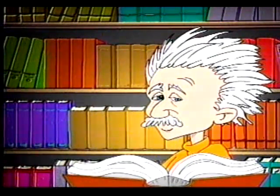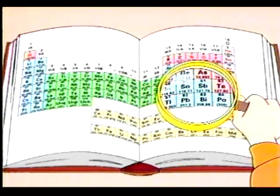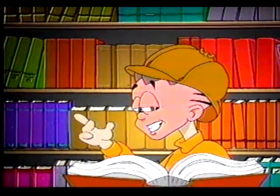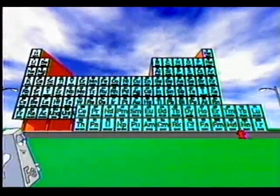Sherlock ya se siente genio. De su investigación preliminar ya sabe que existen metales, no metales y metaloides, y que el hidrógeno se comporta de una manera muy peculiar. También sabe que los elementos de una misma familia tienen propiedades similares. Al analizar los elementos de manera vertical, Sherlock encuentra que algunas propiedades varían de manera regular de izquierda a derecha a lo largo de los periodos.